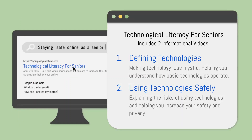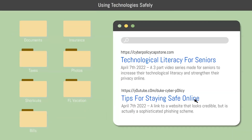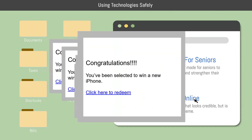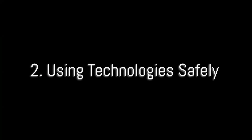Technological Literacy for Seniors is a two-part video series intended to help seniors understand commonly used technologies, become aware of the risks those technologies may face, and increase their overall safety and privacy online. Using Technology Safely is the second video in the series. Now that you have an understanding of how technologies work from a technical perspective, you will be able to understand their potential risks. You should not become fearful of using technology — for each risk, a solution will be presented so that you can continue using technology safely and securely.